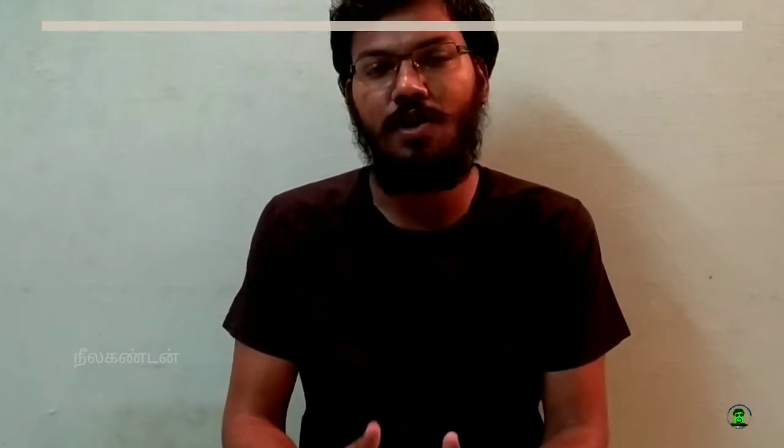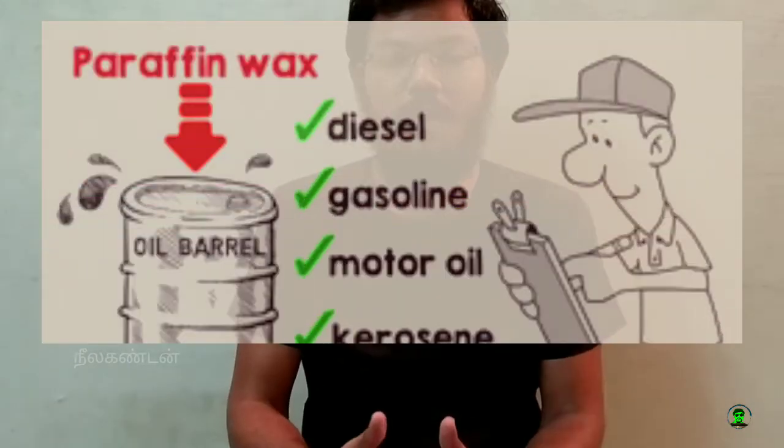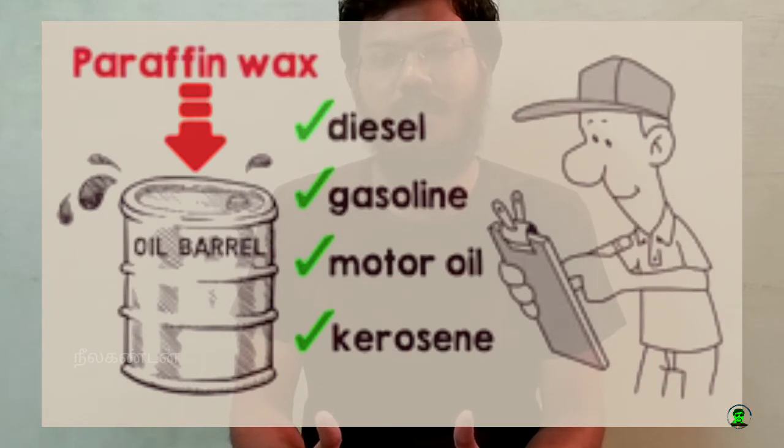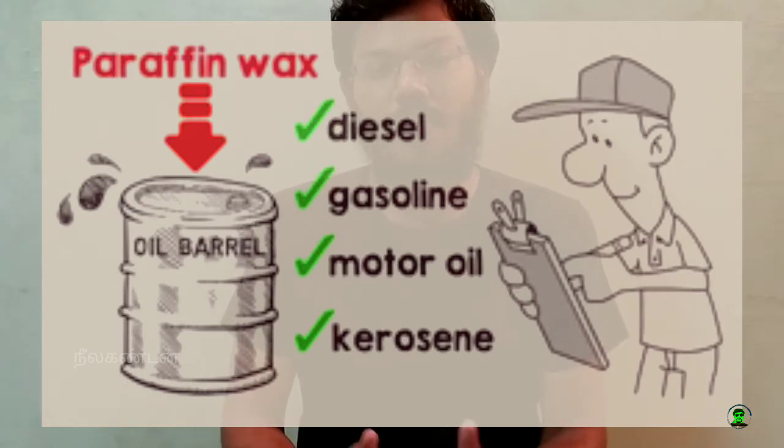Petroleum by-products include diesel, gas, and kerosene, which are used to produce paraffin wax. You can use this pan for paraffin wax, and you can also use it in candles.